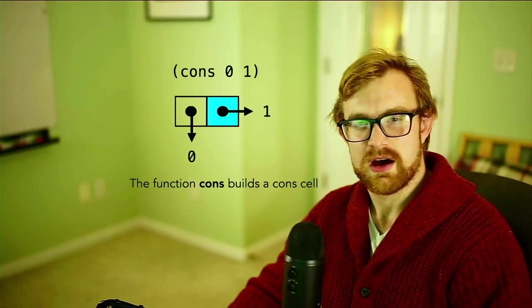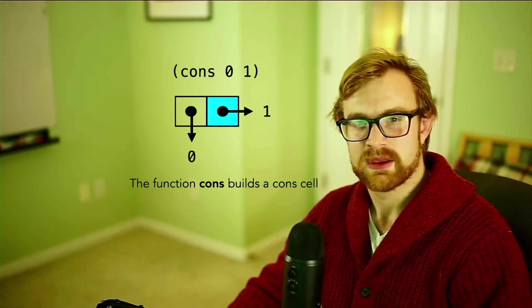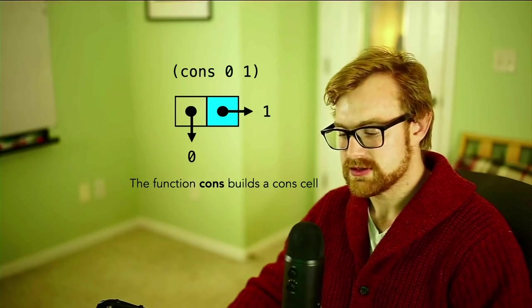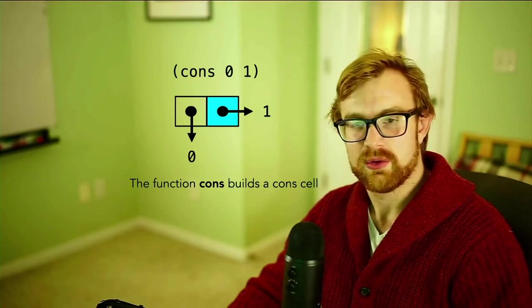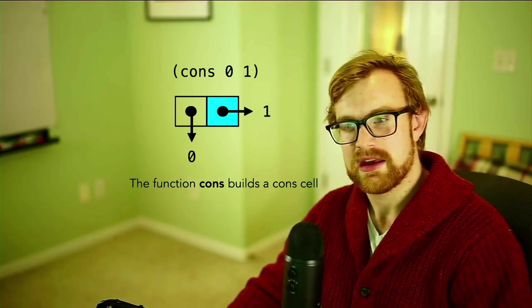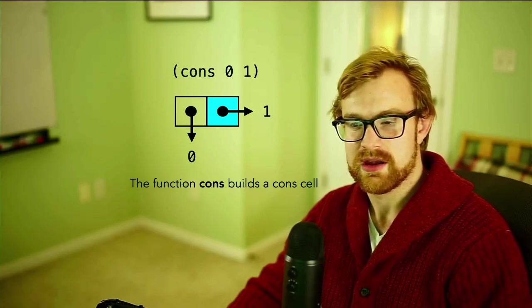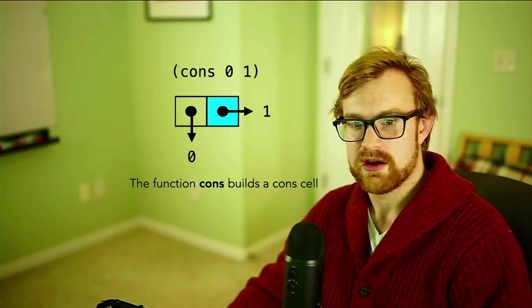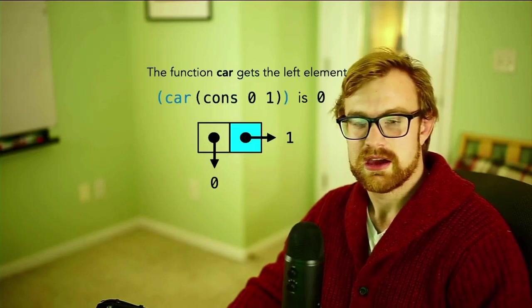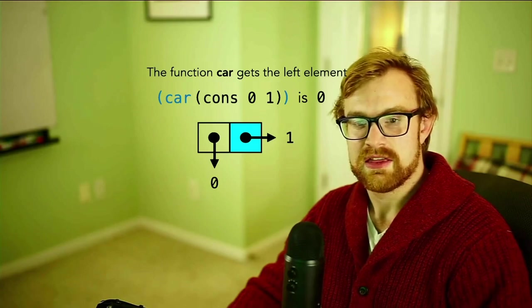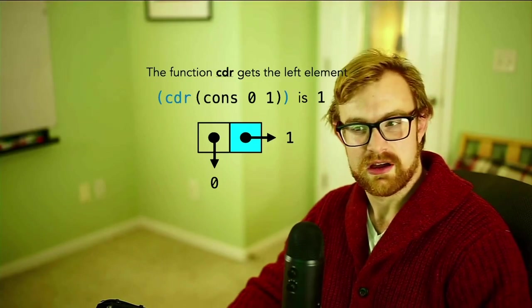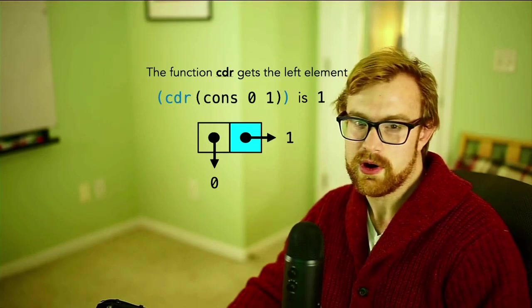So we remember the function cons builds a cons cell. Cons accepts two arguments, an x and y coordinate, or a left and right element of the cons cell. So for example, cons of 0, 1 builds a cons cell, where the car of the cons cell is the number 0, and the cdr of the cons cell is the number 1.